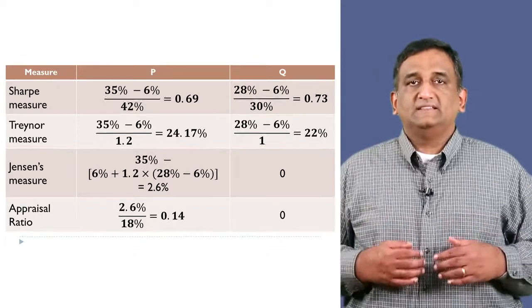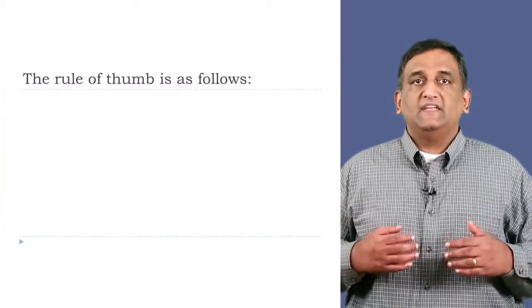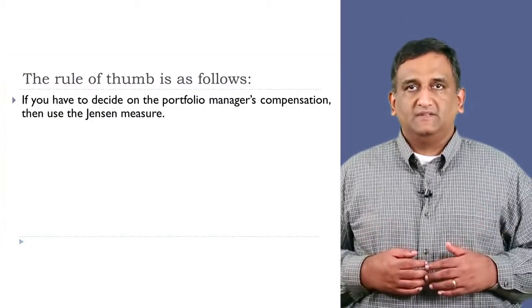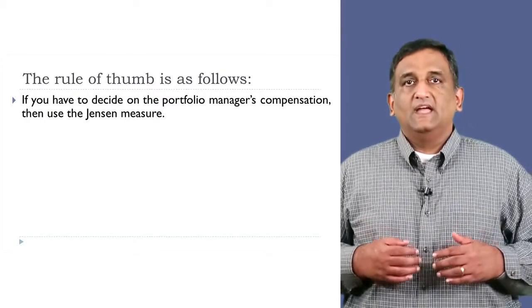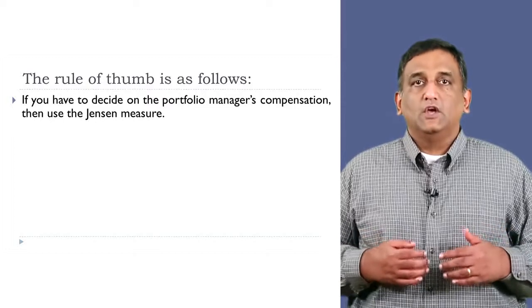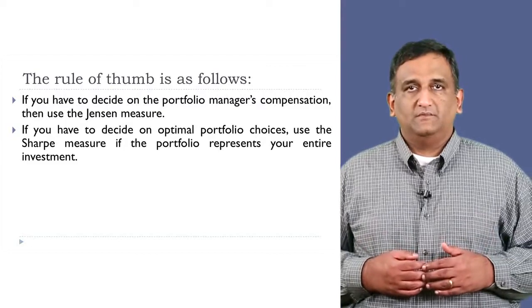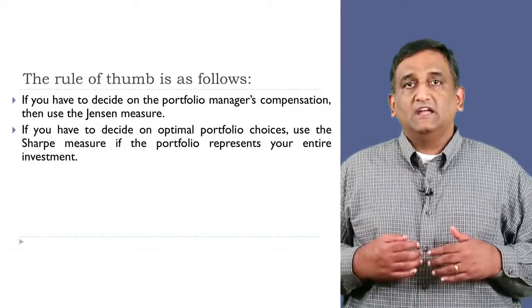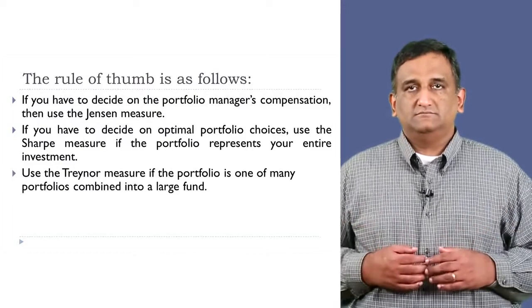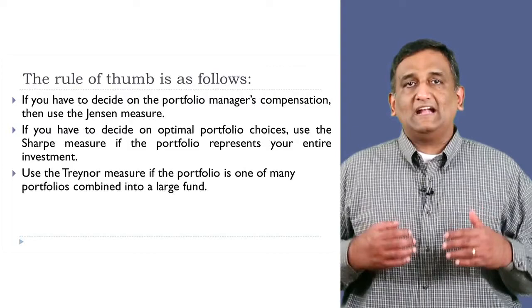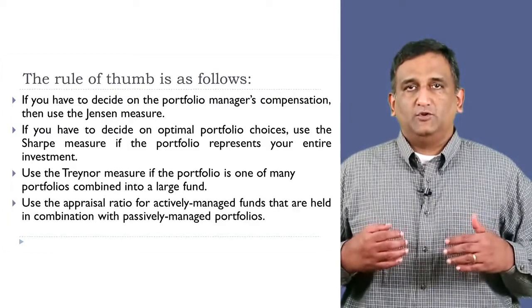The rule of thumb is as follows. If you have to decide on the portfolio manager's compensation, then use Jensen's measure. It tells us how much value the manager has actually added. If you have to decide on optimal portfolio choices, use the Sharpe measure if the portfolio represents your entire investment. Use the Treynor measure if the portfolio is one of many portfolios combined into a large fund. Use the appraisal ratio for actively managed funds that are held in combination with passively managed portfolios.